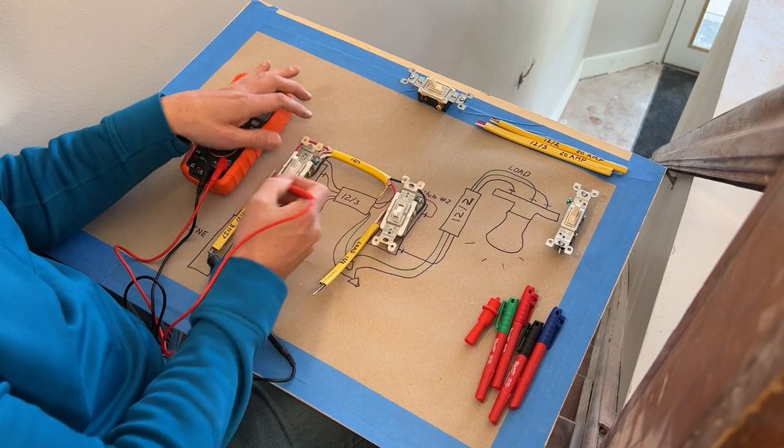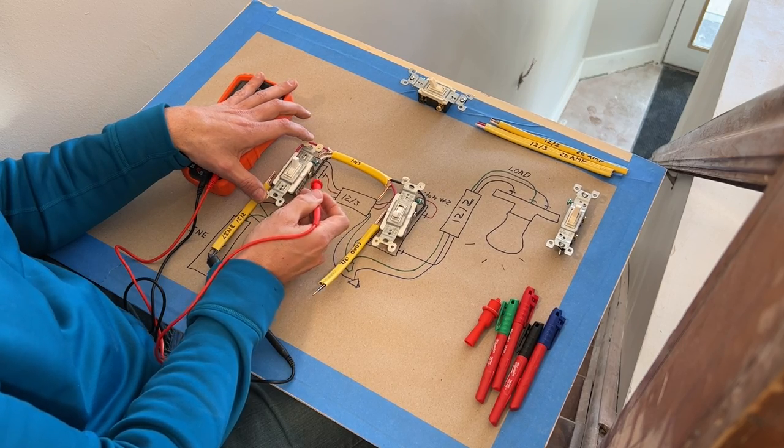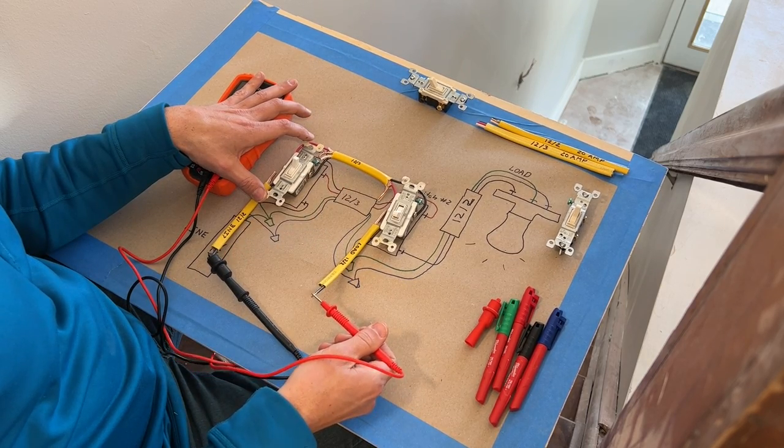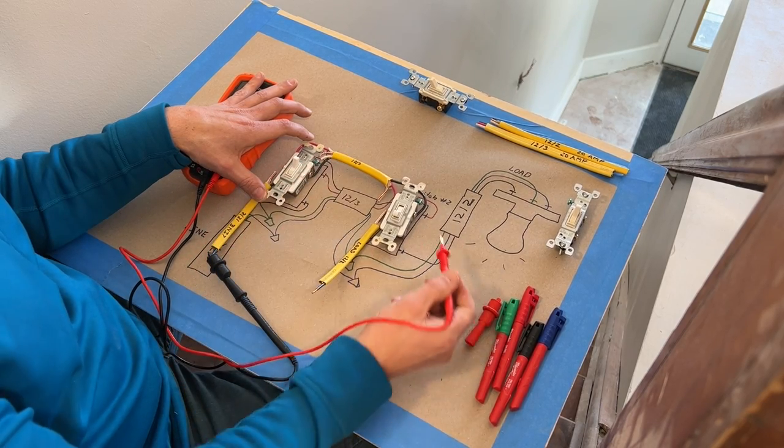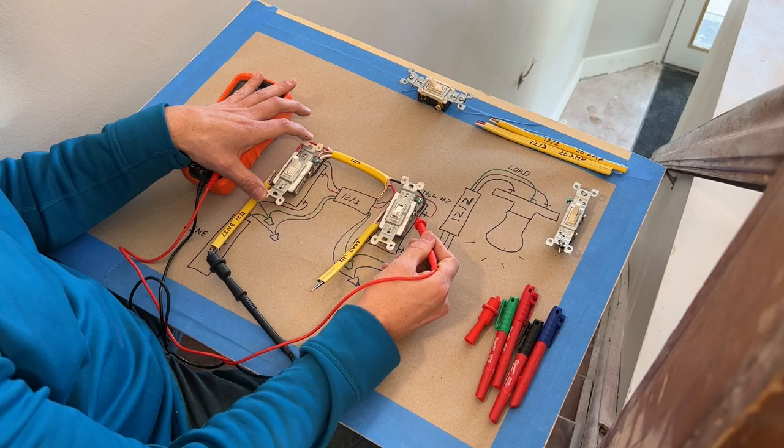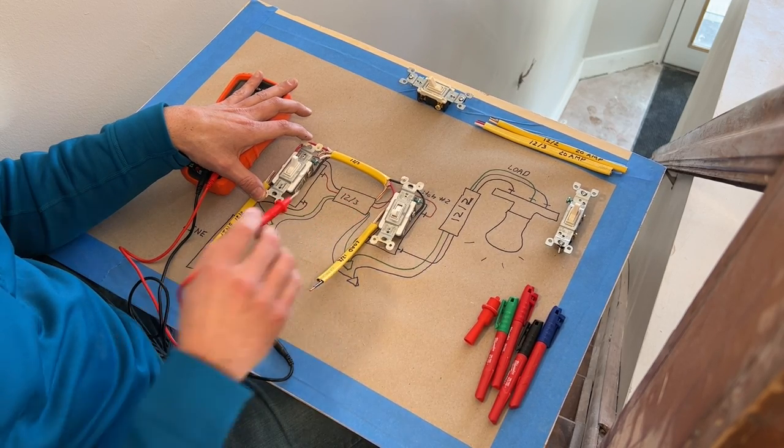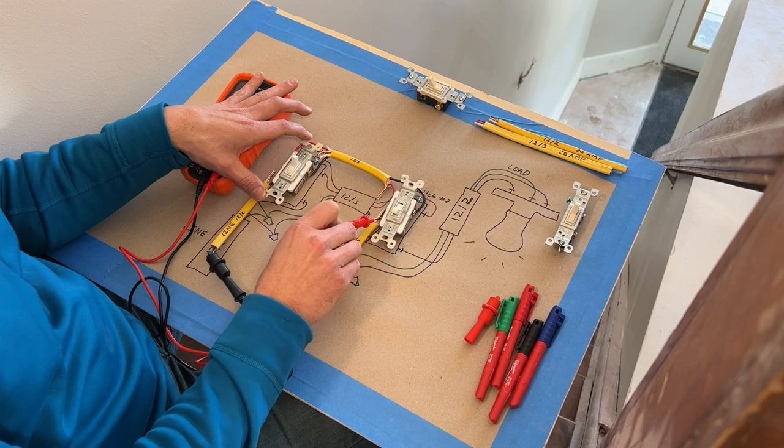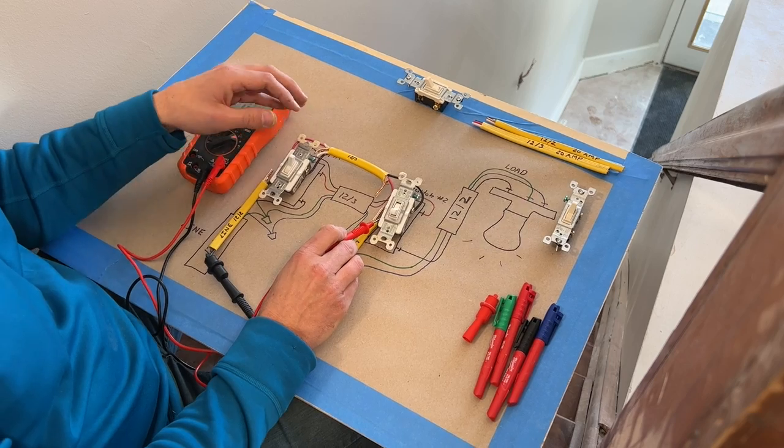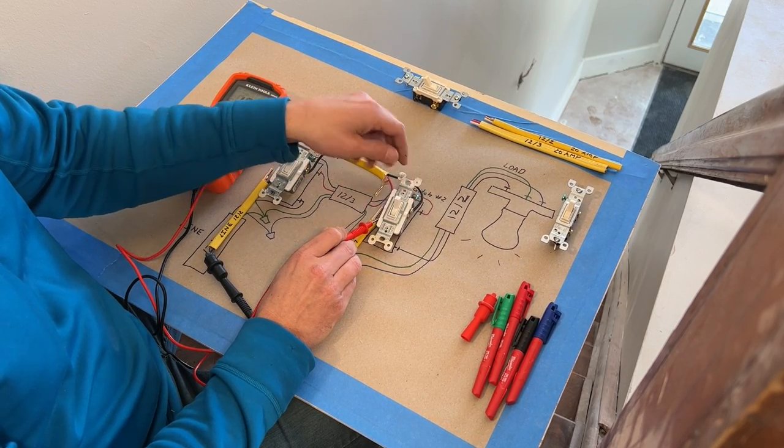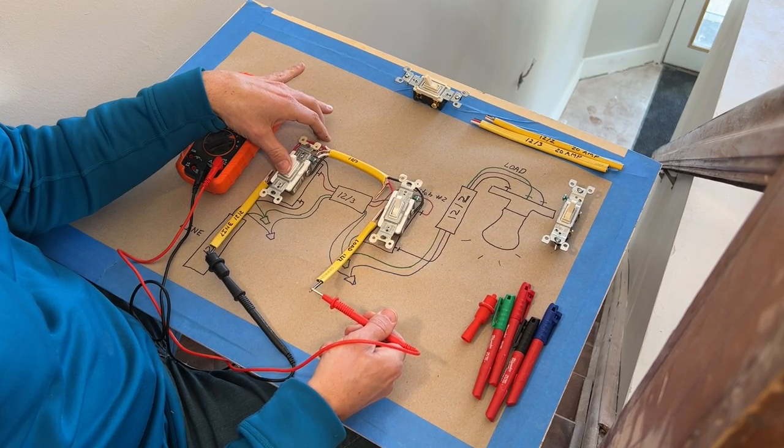So right now I have continuity through this light switch to this screw terminal. I do not have continuity all the way to my light. So if I follow the black through, we still have continuity, but then I go to the black terminal which would provide a connection to my light, I do not. I do not have continuity. Now if I test right there and I flip the switch, now I have a connection through, and I'd have a connection all the way through to my light switch.